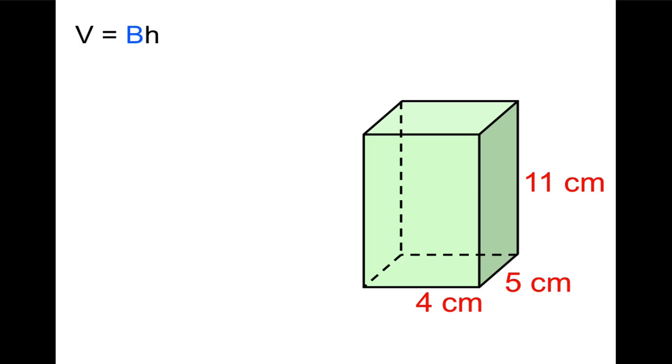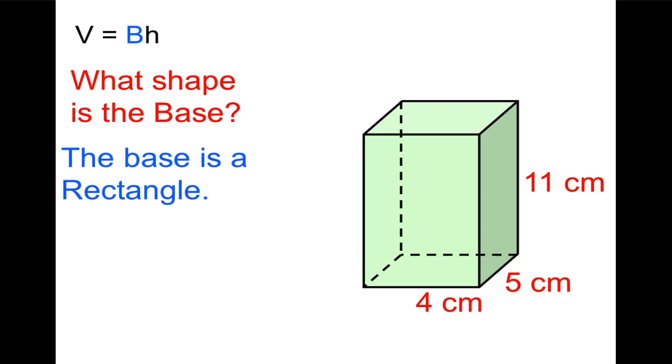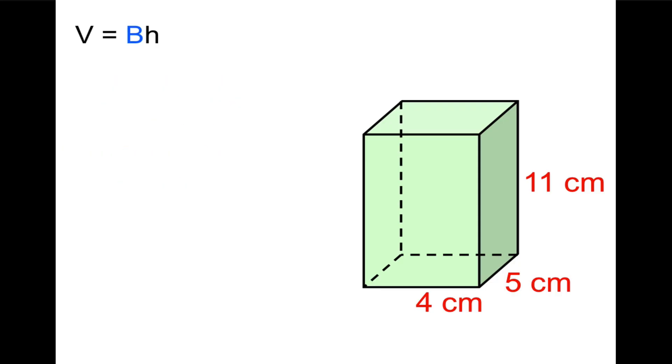All right. Good job. I'm sure you figured it out that this is a rectangular prism. So what shape is the base? The base is a rectangle. So the area of the base will equal base times height. And here we're talking about the base and height of the rectangle. So we've got 5 times 4, or 4 times 5. Either way, it's going to equal 20. That would be 20 square centimeters for the area of that base.